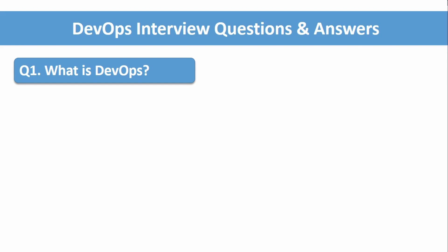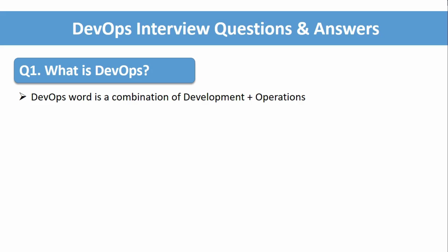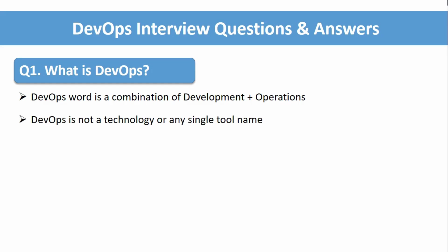If you have any other thought process, or your own theoretical or practical definitions, you can definitely go with those as well. To answer question one — what is DevOps — first, DevOps is not a single tool. DevOps is a word which is a combination of development and operations. So it is a combination of the development and operations teams. DevOps is not a technology or any single tool.